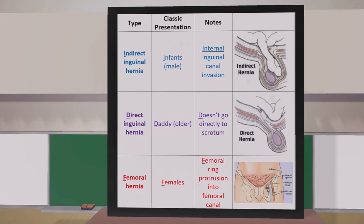Finally, we come to femoral hernias — F for femoral and F for females, as the classic presentation is in females. There is a femoral ring protrusion into the femoral canal, and as mentioned, it emerges inferior to the inguinal ligament. Femoral hernias emerge inferior to the inguinal ligament. That's it for hernias — hope you enjoyed, take care.